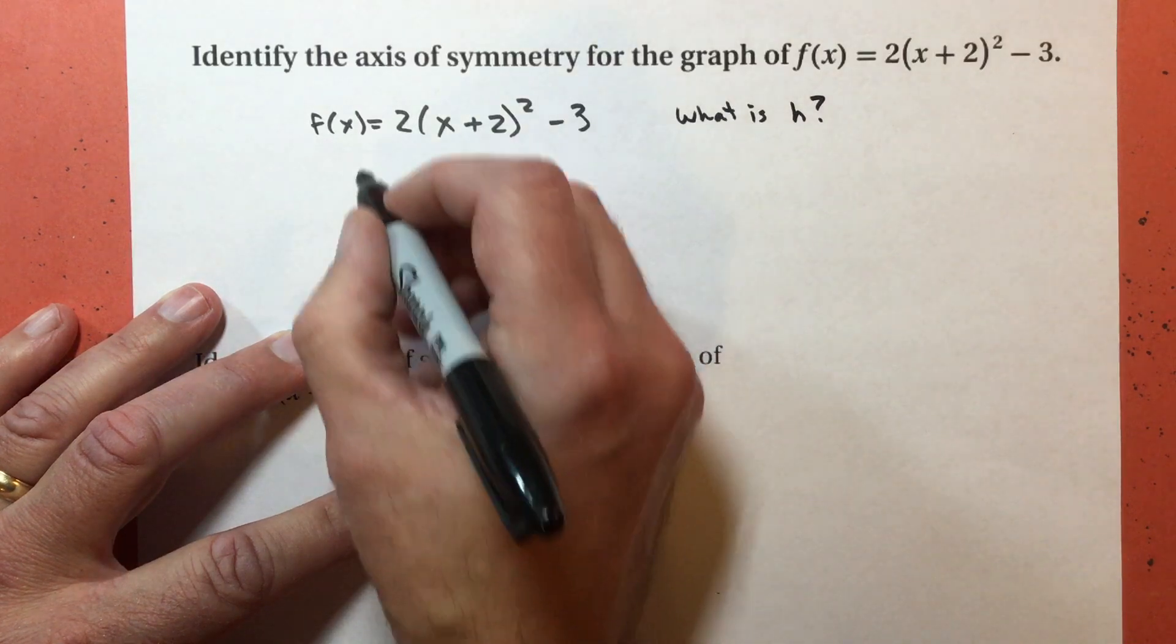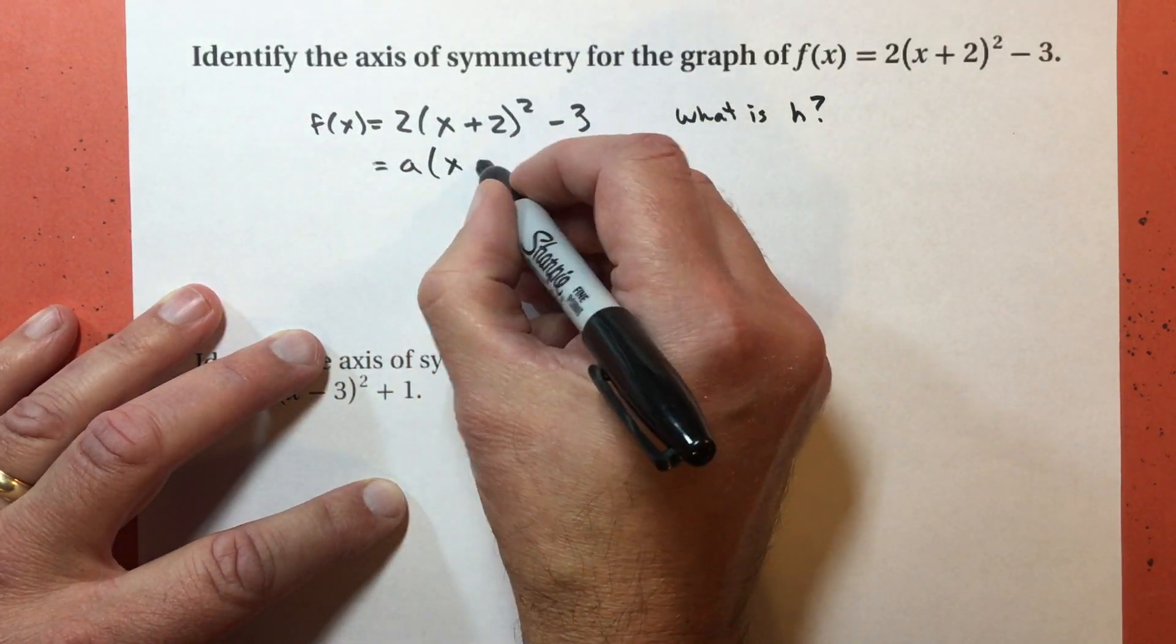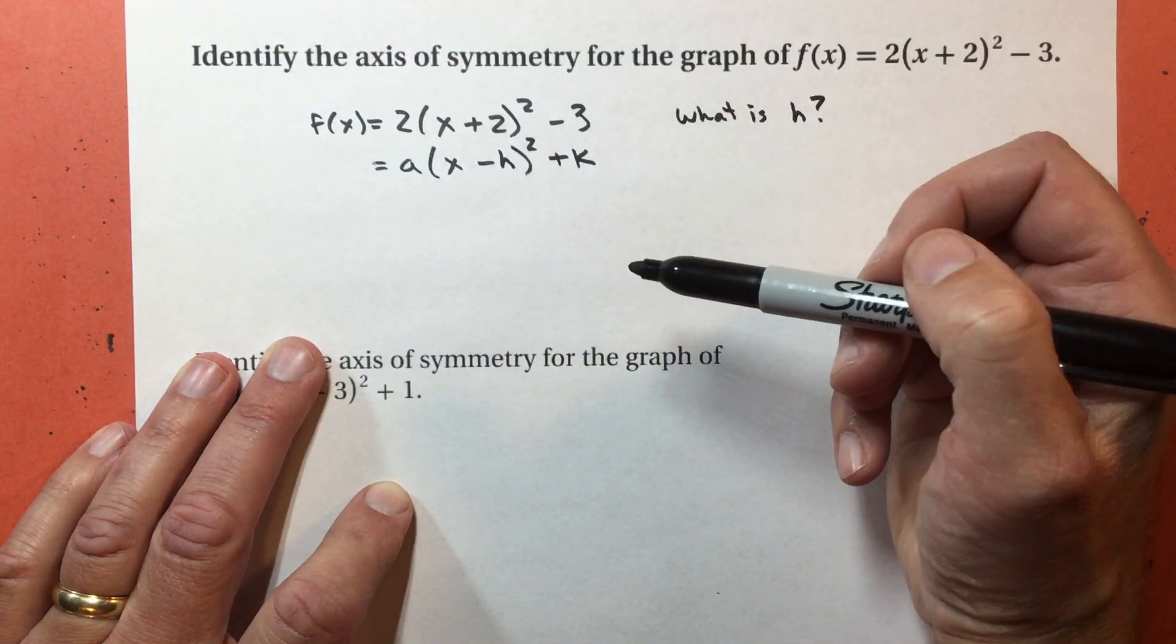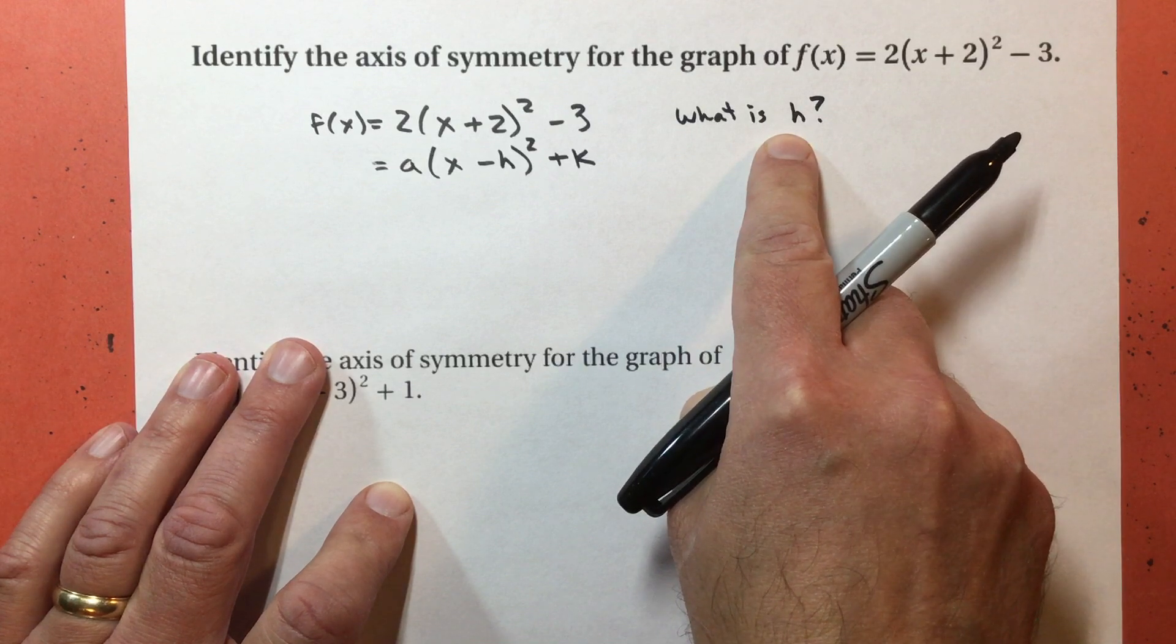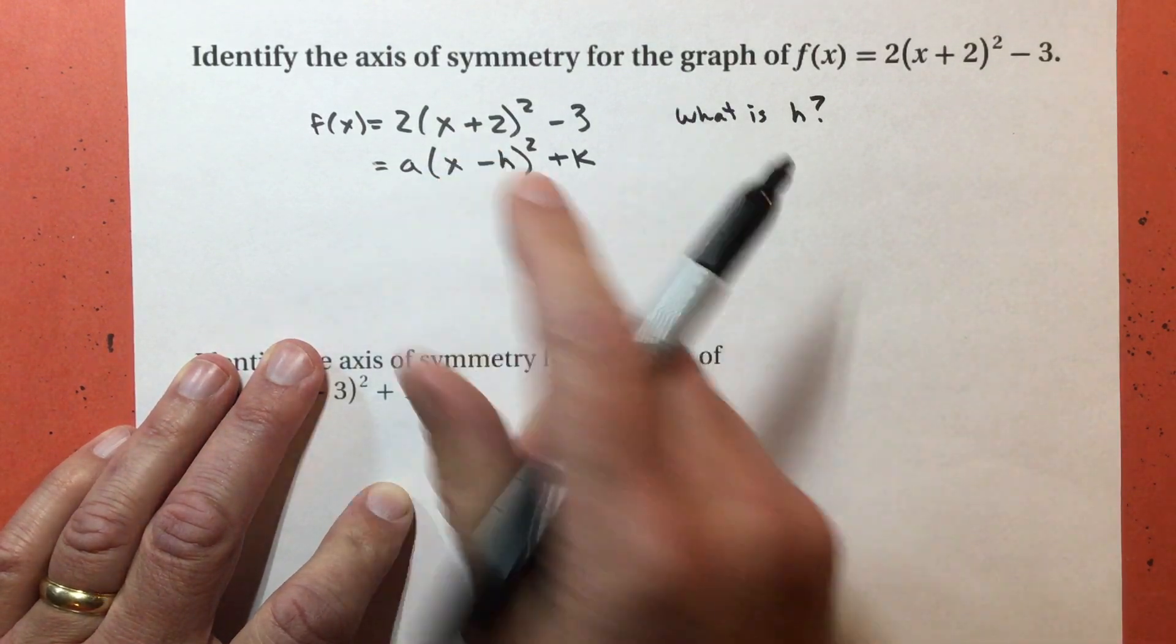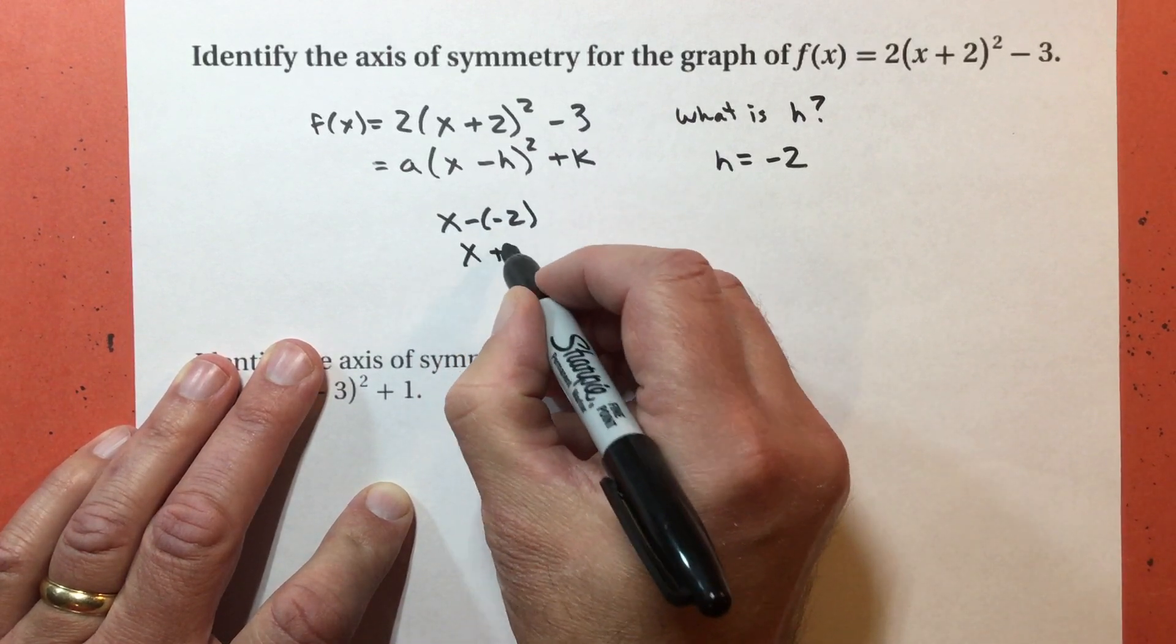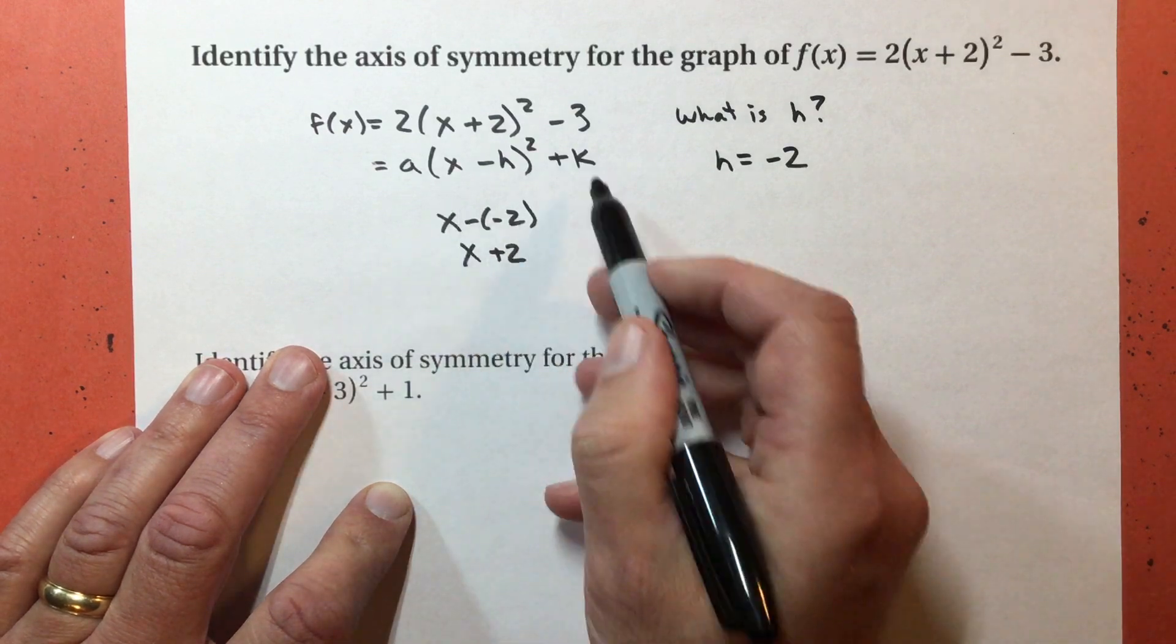Remember, vertex form is a(x - h)² + k. The a is 2, the k is negative 3, but I don't care about either one of those for this one. The only thing I need to know is what's the h. Since I'm subtracting h and it looks like adding 2, my h is negative 2.